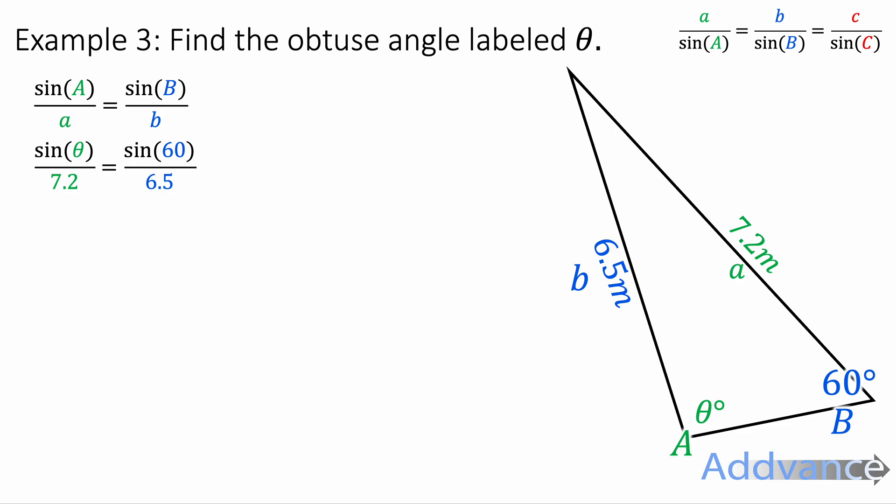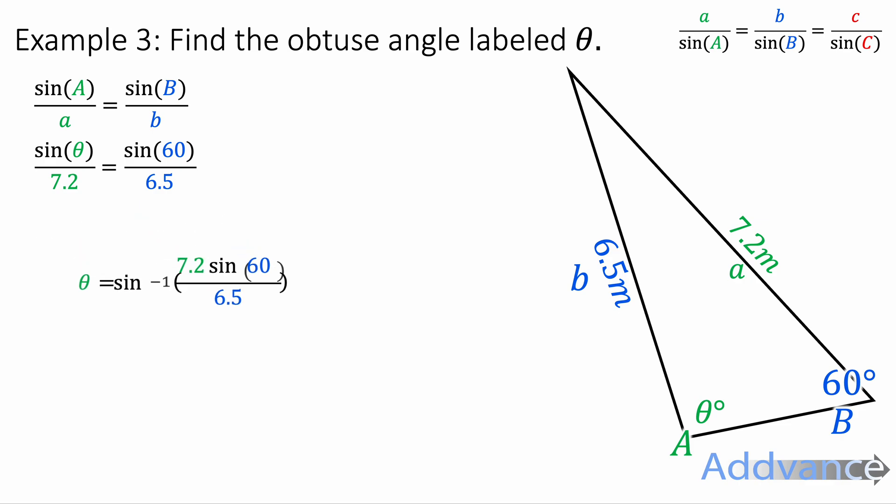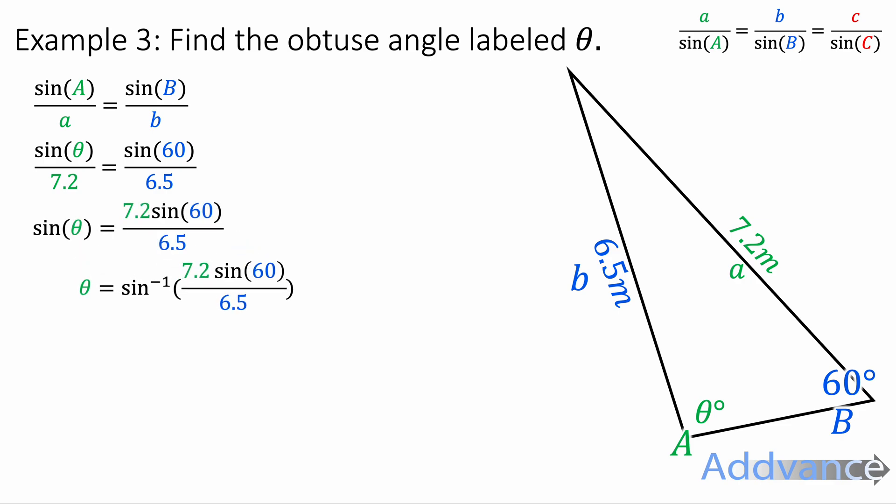We get rid of the divide by 7.2 by multiplying by 7.2, and we get sine theta equals 7.2 times sine 60 over 6.5. Now we do inverse sine, so theta equals inverse sine of 7.2 times sine 60 over 6.5.